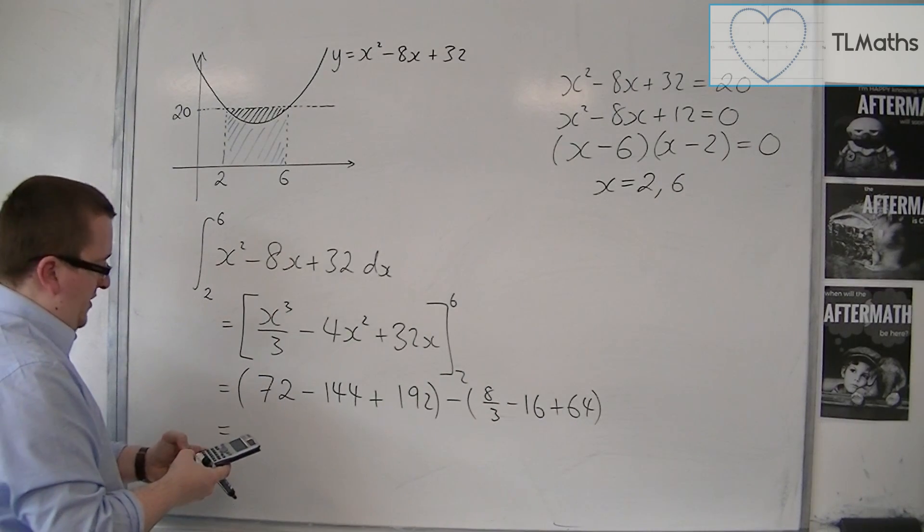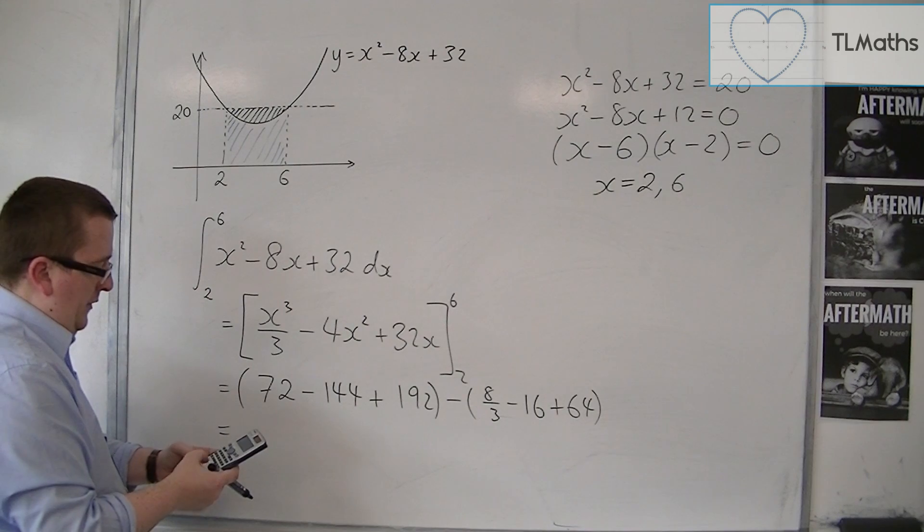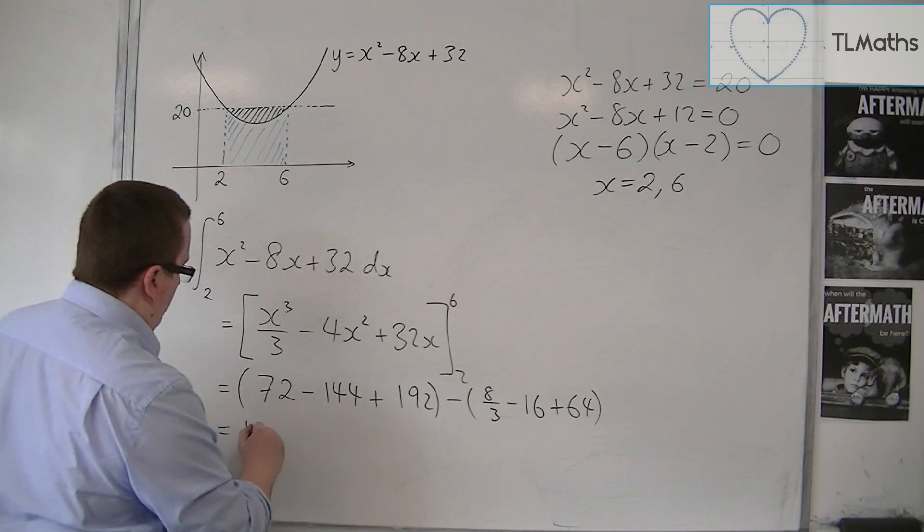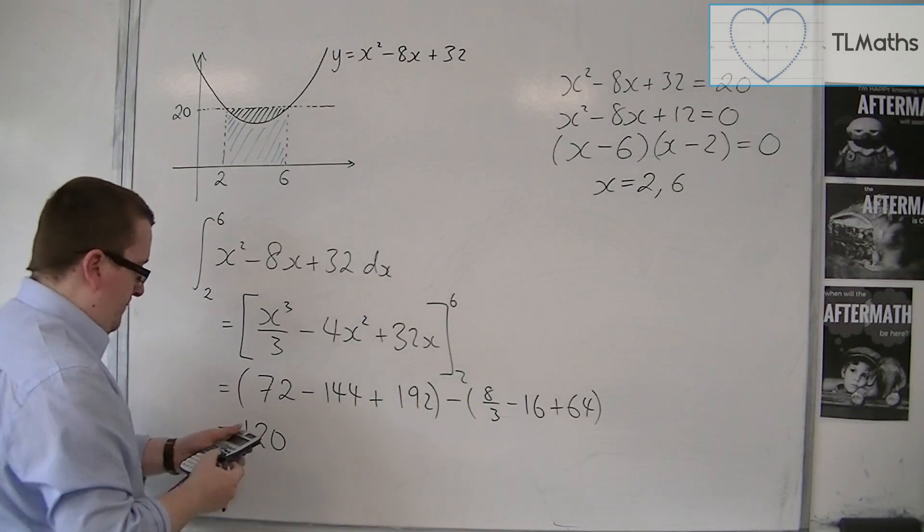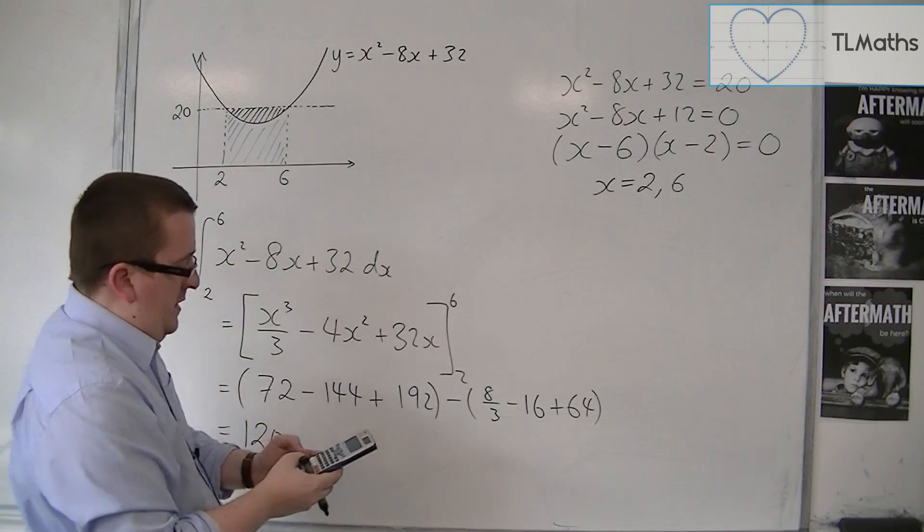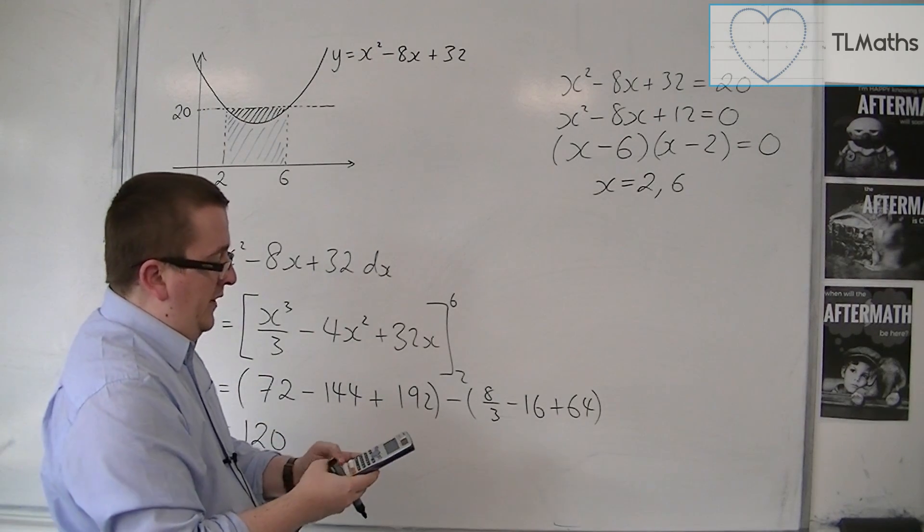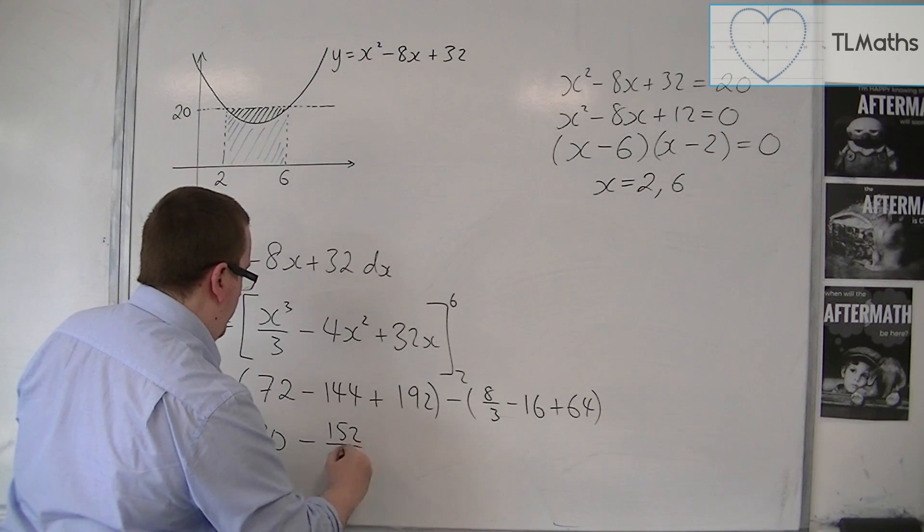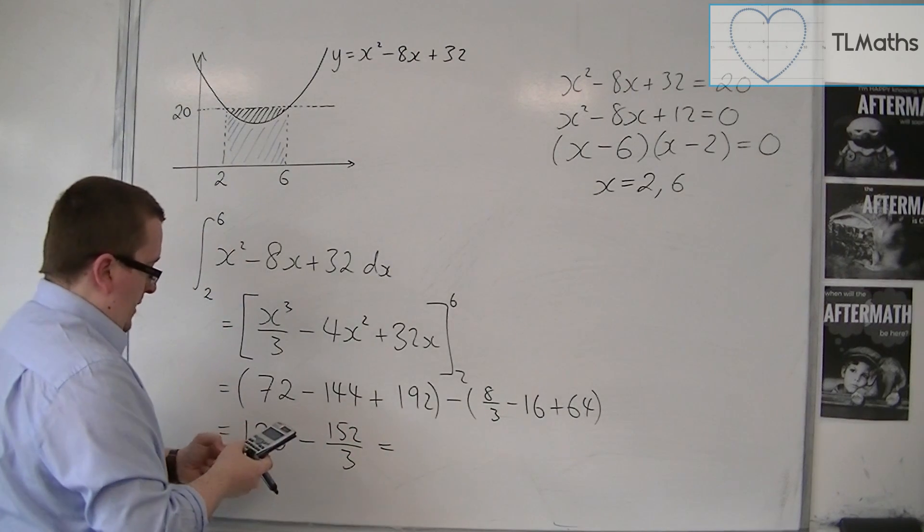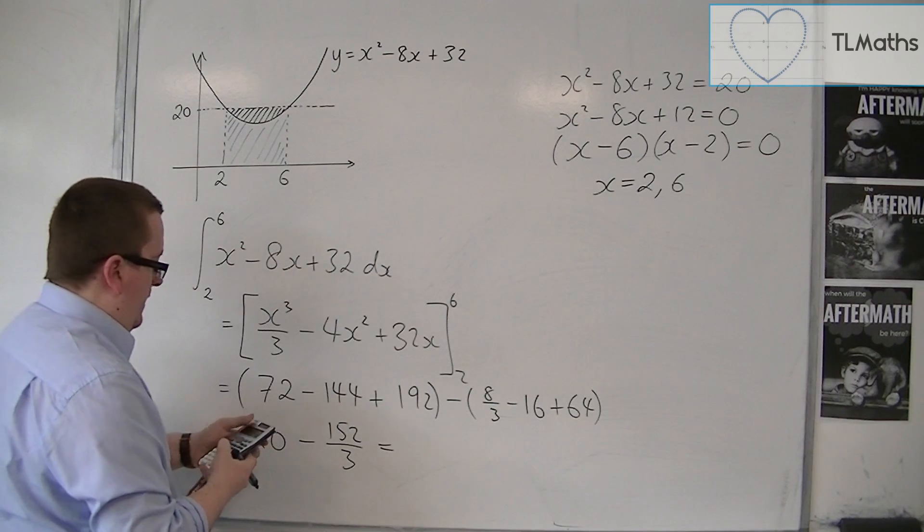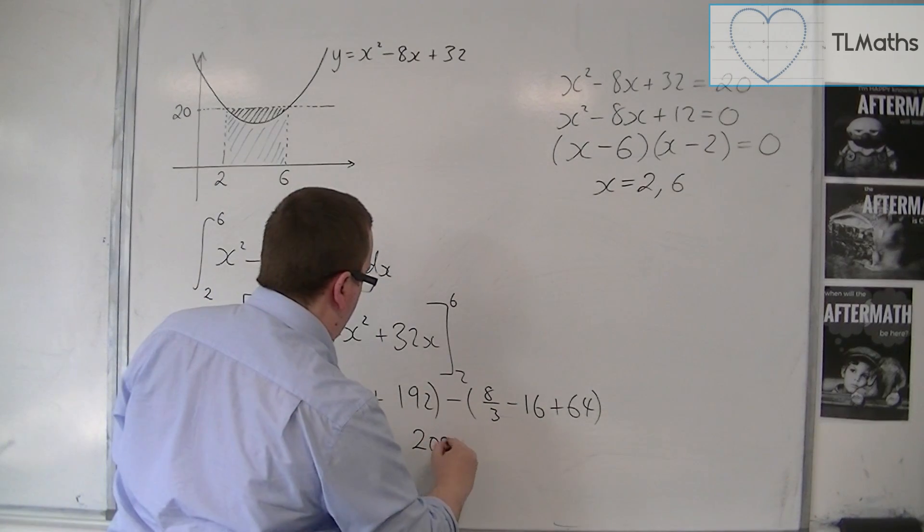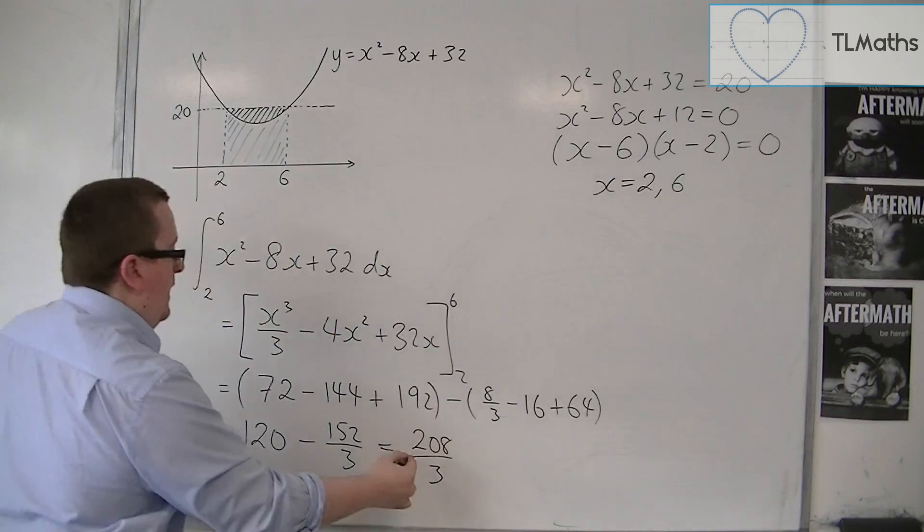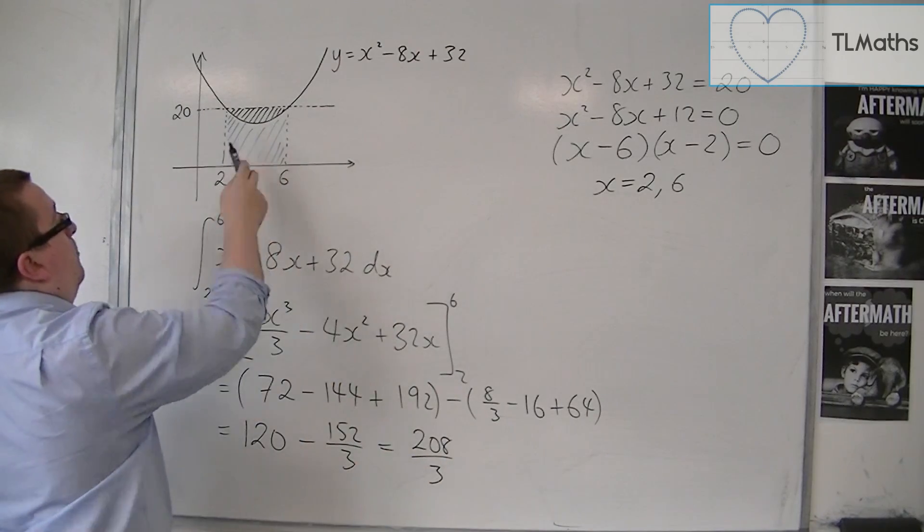So we have 72, take away 144, plus 192. That gets me 120 in the first bracket. Then I've got 8 thirds, take away 16, plus 64 in the second bracket. So take away 152 over 3. So 120, take away that, is 208 over 3. So that is the area of the blue region.